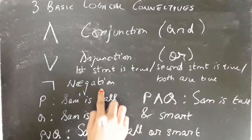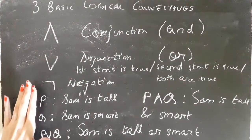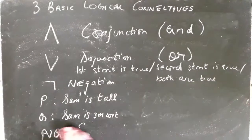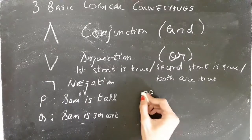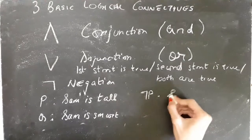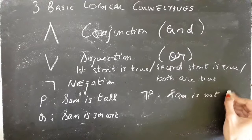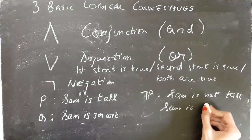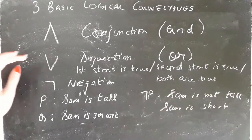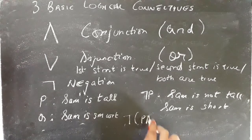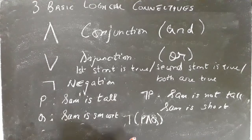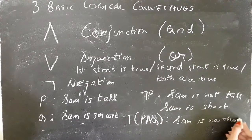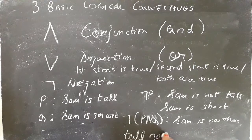Negation is basically writing the negative form of a statement. The negation of P, denoted as ¬P, is: Sam is not tall, or in other words, Sam is short. We can also have the negation of a compound statement — the negation of P and Q is: Sam is neither tall nor smart.